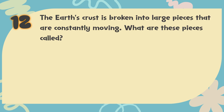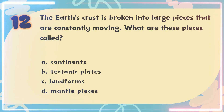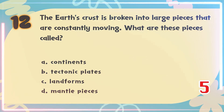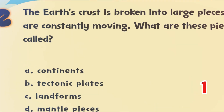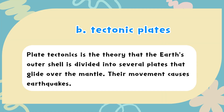Number 12. The Earth's crust is broken into large pieces that are constantly moving. What are these pieces called? The choices are: A. Continents, B. Tectonic plates, C. Landforms, D. Mantle pieces. The correct answer is B. Tectonic plates. Plate tectonics is the theory that the Earth's outer shell is divided into several plates that glide over the mantle. Their movement causes earthquakes.